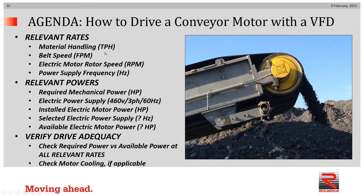Relevant rates include materials handling rate, usually expressed in tons per hour; belt speed in feet per minute; electric motor rotor speed in RPM; and power supply frequency in hertz. Relevant powers include required mechanical power in horsepower, electric power supply available (460 volt three-phase 60 hertz), installed electric motor power in horsepower, selected electric power supply frequency, and available electric motor power. We're going to explore how to check required power versus available power at all relevant rates, and we'll check motor cooling if applicable.